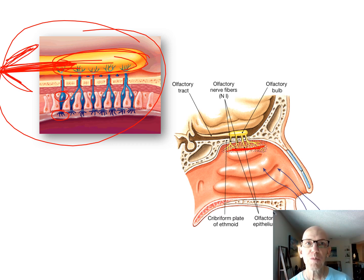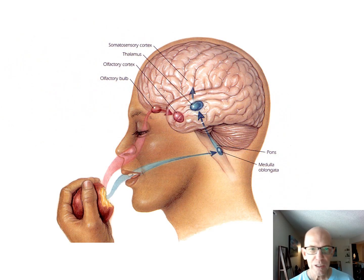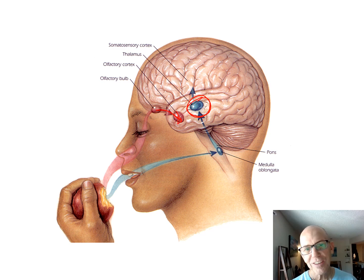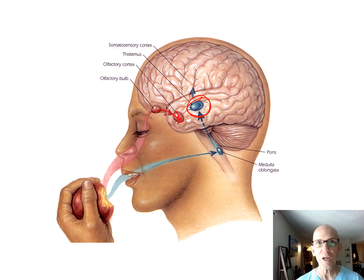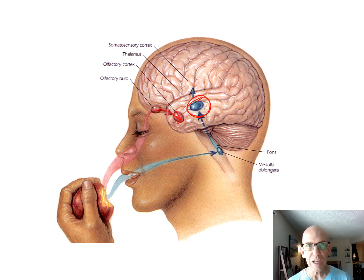Smell and hearing both go to the temporal lobe. Uniquely, smell is the only sense that doesn't route through the thalamus mail station first — because the olfactory bulb is already so close to the brain. Some say this is why smell is most directly tied to memory — it's a direct pipeline. That's everything for today's lecture — the last of biology. The next lecture is on perception.